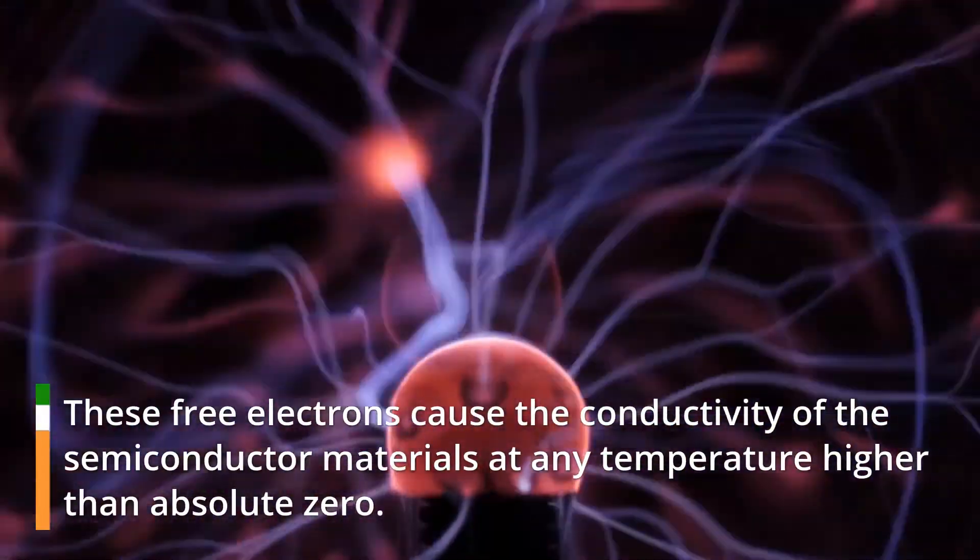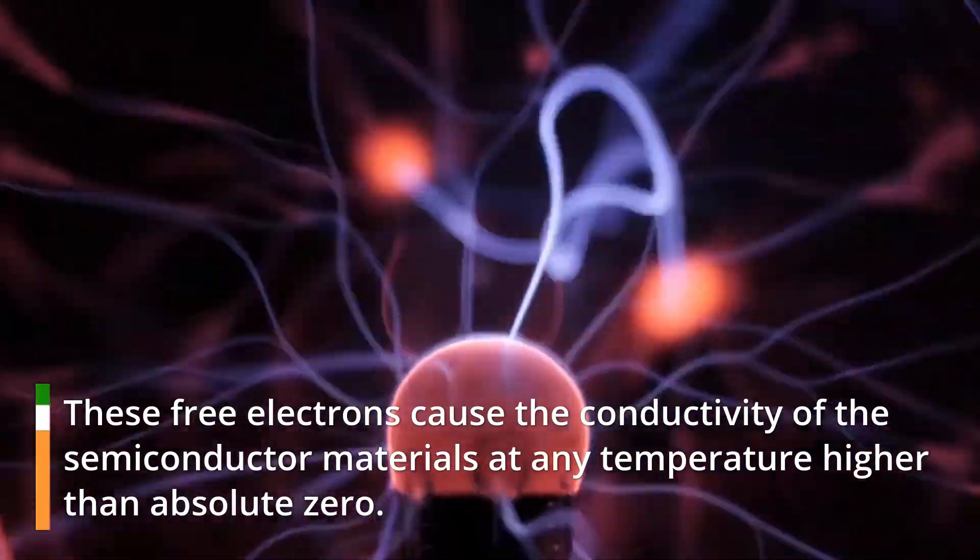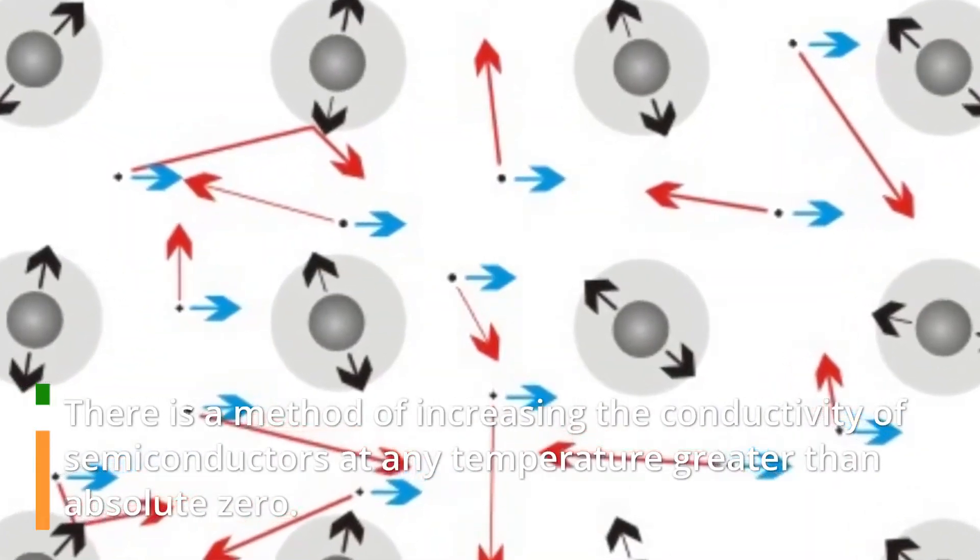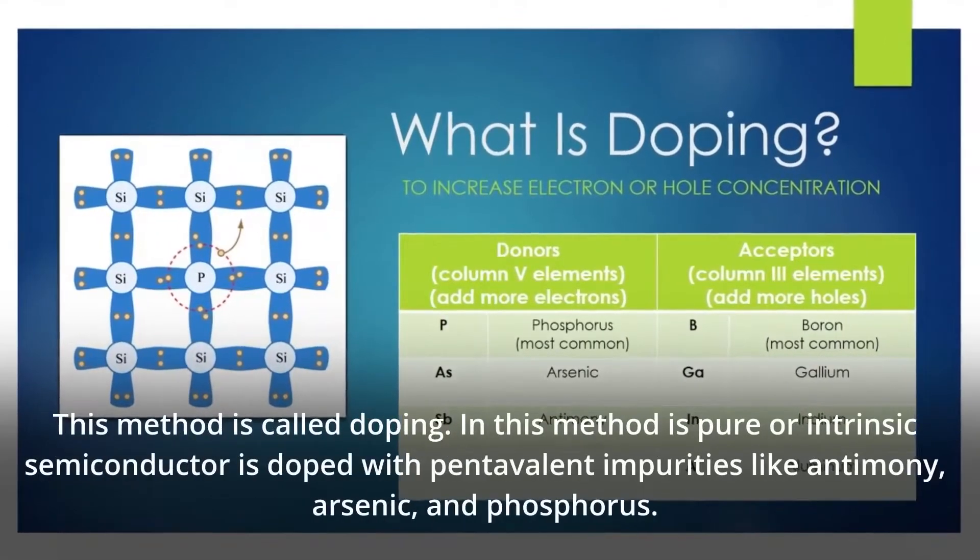These free electrons cause the conductivity of semiconductor materials at any temperature higher than absolute zero. There is a method of increasing the conductivity of semiconductors at any temperature greater than absolute zero. This method is called doping.